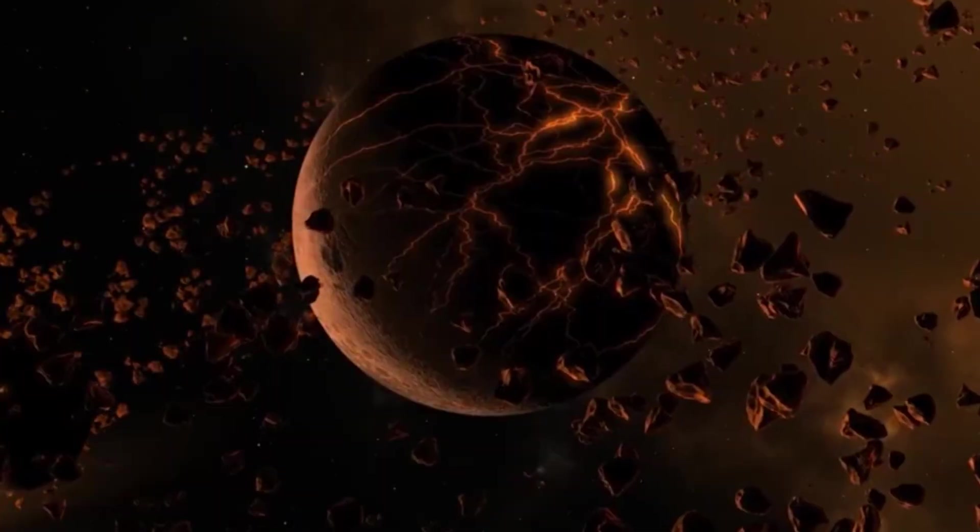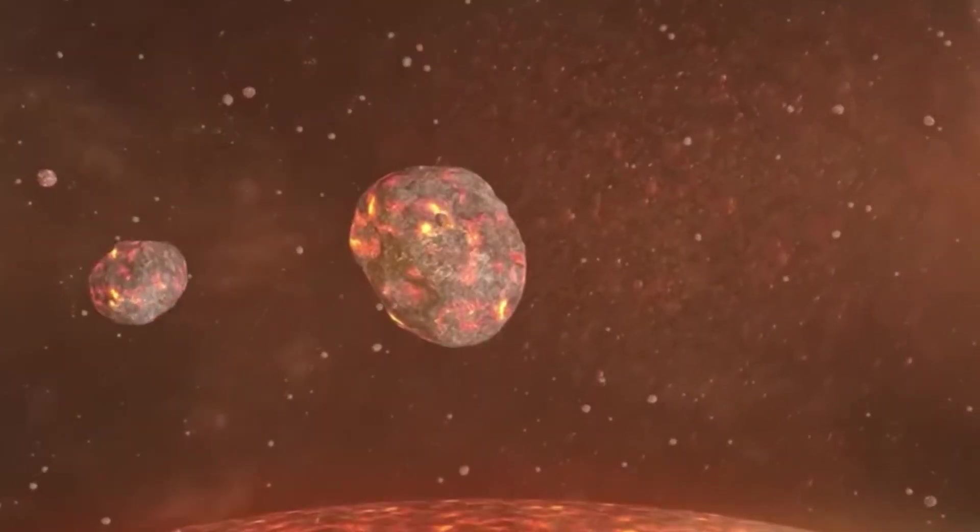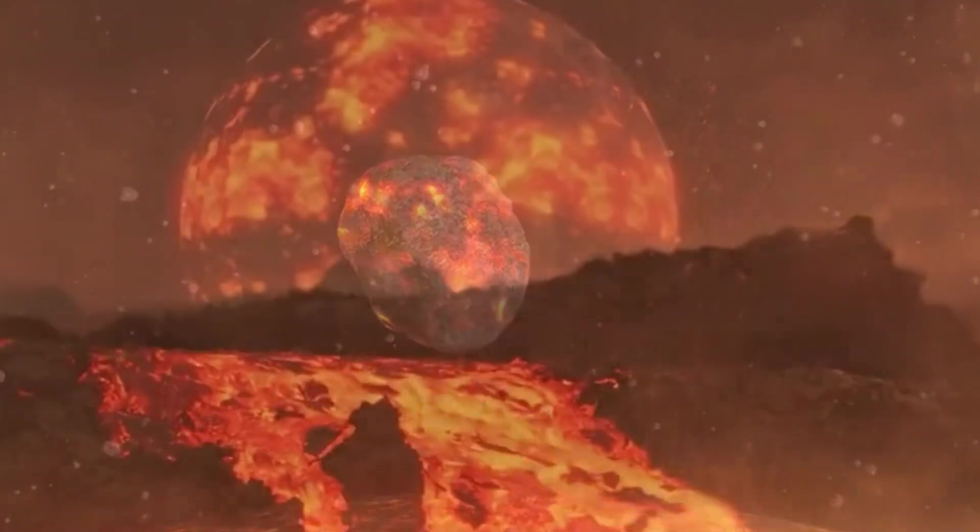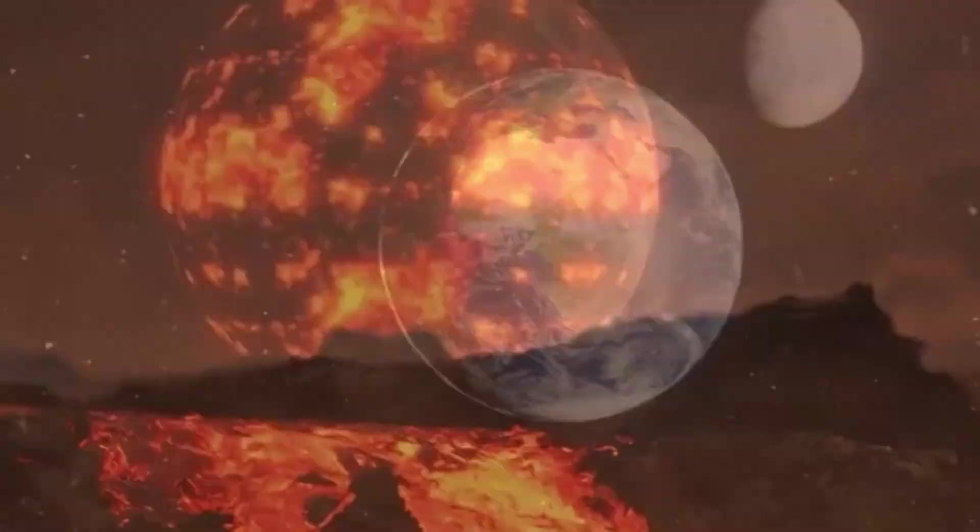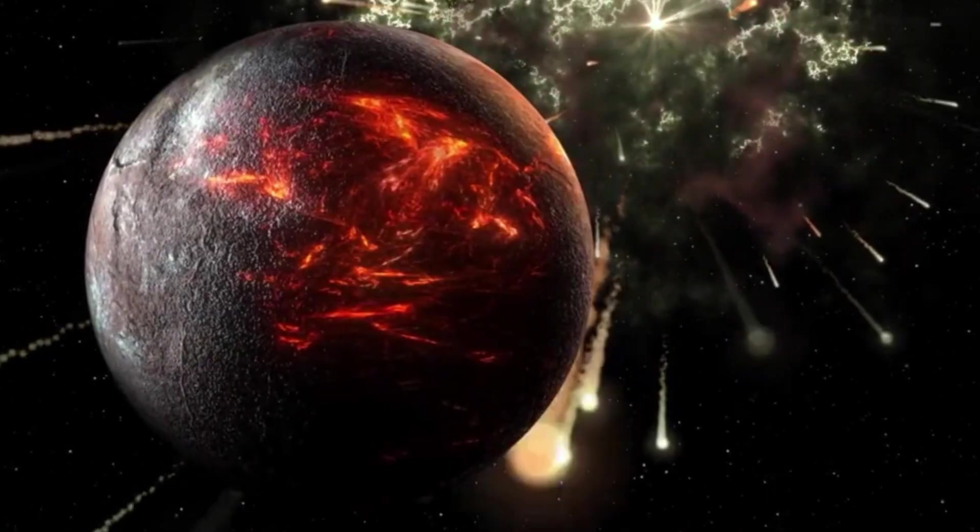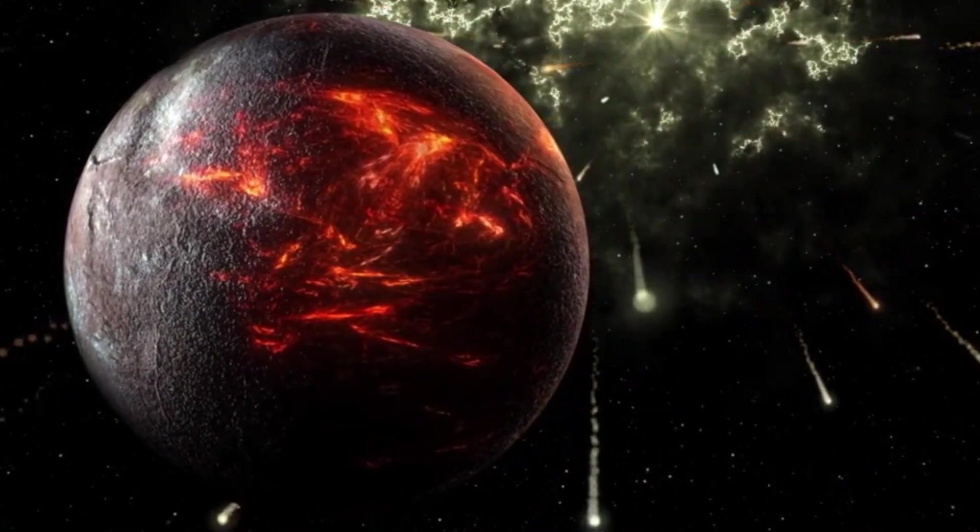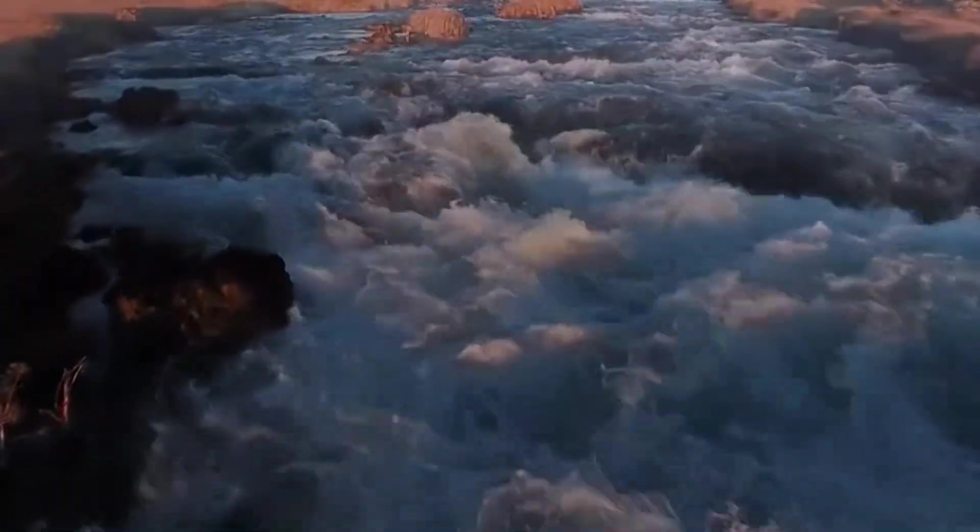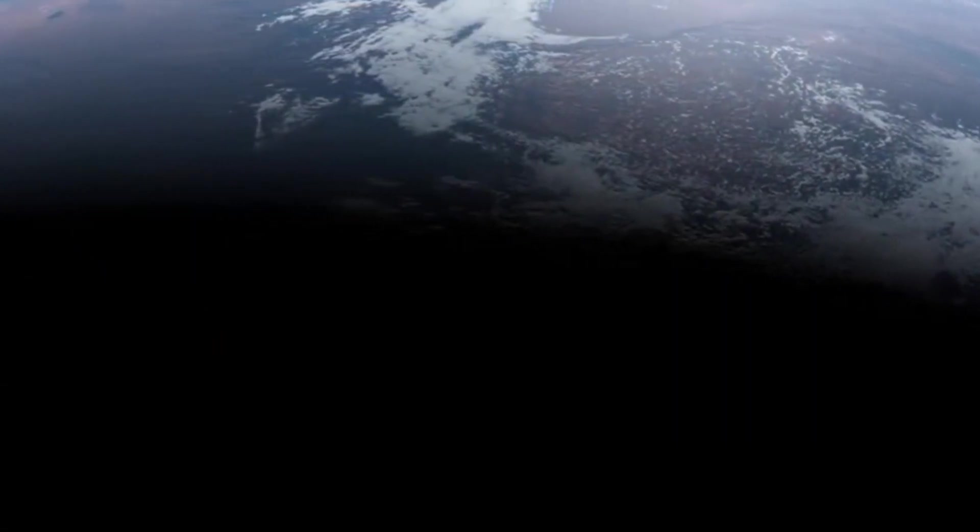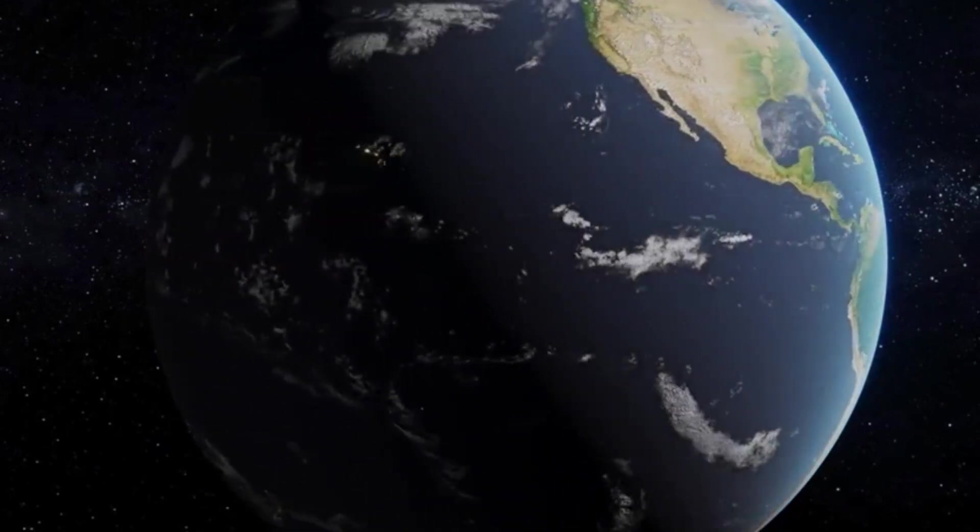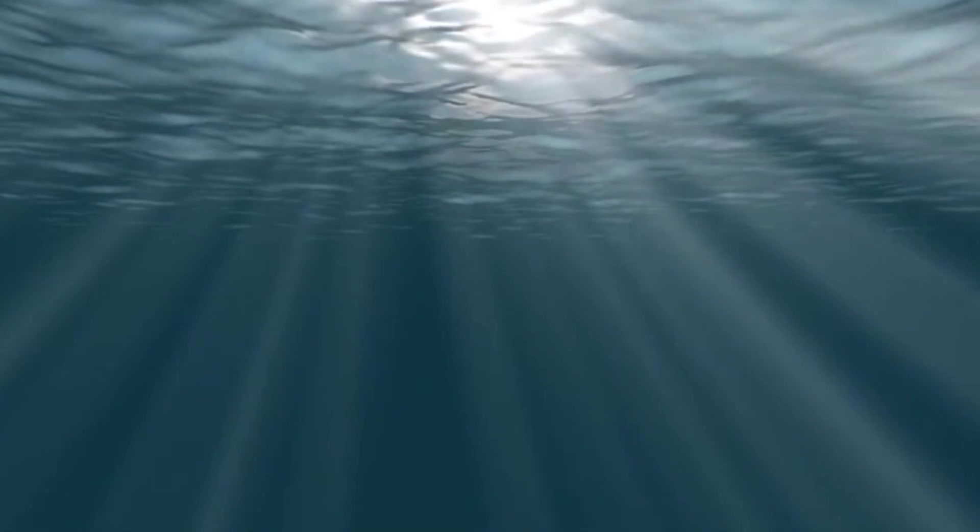The rocks are clear: the magnetic field is not a permanent fixture. It's restless, unstable, and constantly evolving. For us, that means only one thing. The next reversal is not a matter of if, but when. Scientists may not know the exact date or decade it will occur, but all evidence points to the fact that Earth is overdue for a change. And when it does happen, the effects won't just be locked away in the pages of geological history. They will be felt by every living thing on the planet today.